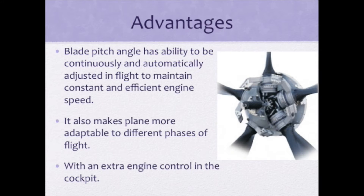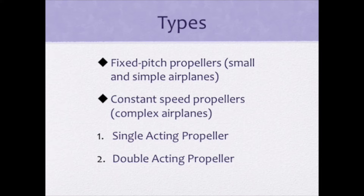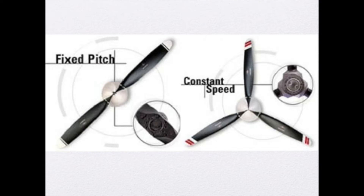A constant speed propeller gives blade pitch angle the ability to be continuously and automatically adjusted in flight to maintain constant and efficient engine speed needed for any situation. It also makes the plane more adaptable to different phases of flight, with an extra engine control in the cockpit. There are two types of propellers installed on current production airplanes: fixed pitch propellers and hydraulically actuated constant speed propellers. Constant speed propeller systems consist of single acting and double acting propellers.